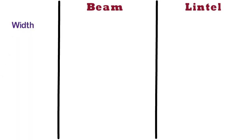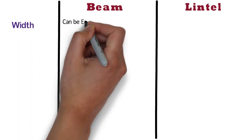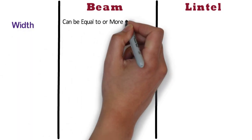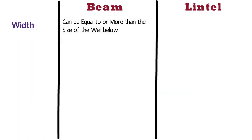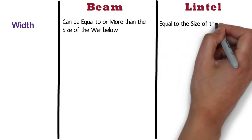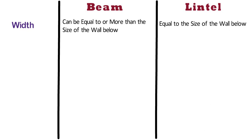Width. The width of a beam can be equal to or more than the size of the wall below, depending on the load. Whereas, the width of a lintel is equal to the size of the wall below.